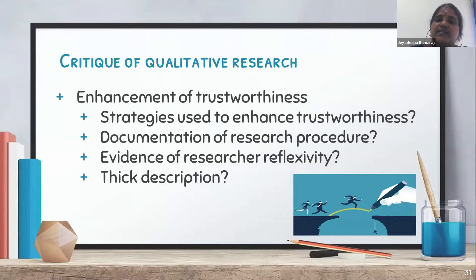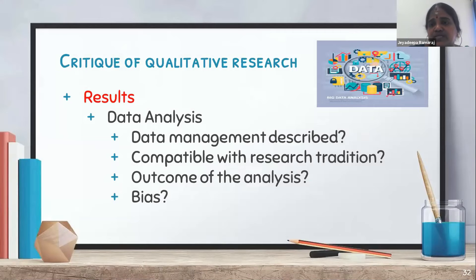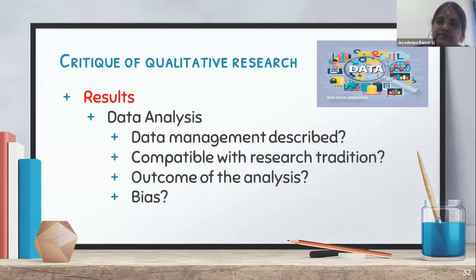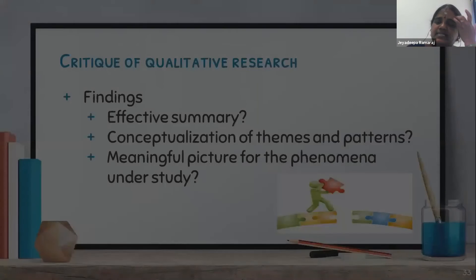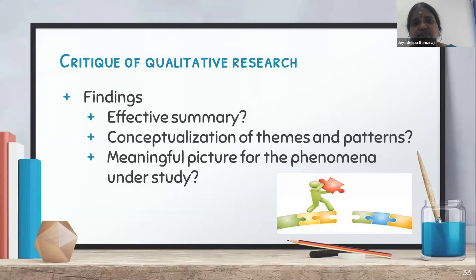Then comes results and data analysis — how the voluminous data was organized, managed, and described, whether it is compatible with the research tradition, whether the outcome of analysis is explained, and whether any bias in coding and decoding is addressed and measures taken to minimize it. Then the findings — whether the summary clearly states the research process and findings, whether themes and patterns are conceptualized clearly, and whether a meaningful picture for the phenomena under study is presented.